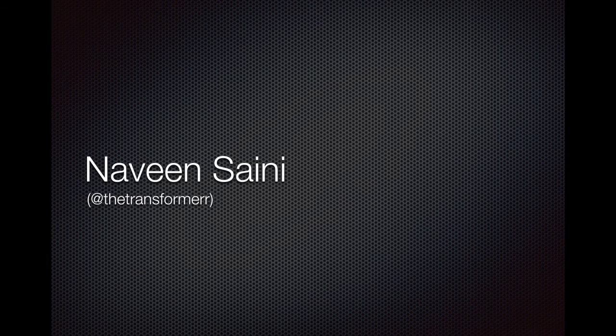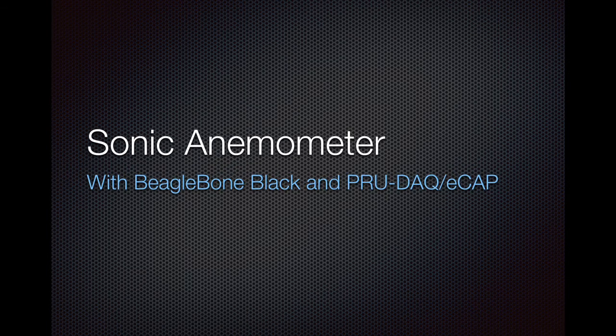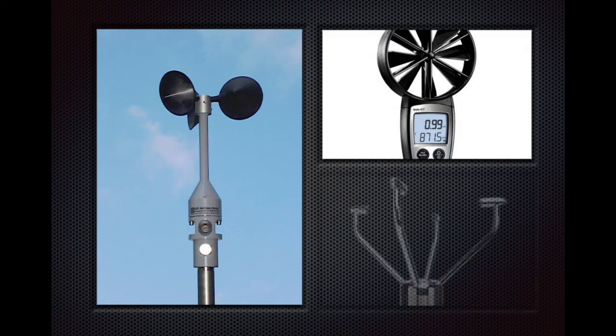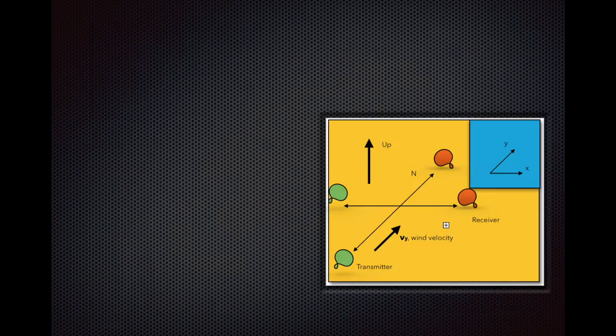Hi friends, my name is Naveen Saini and my project is sonic anemometer. So what is an anemometer? An anemometer is a device used for measuring wind speed. They may be of different types as shown in this picture.